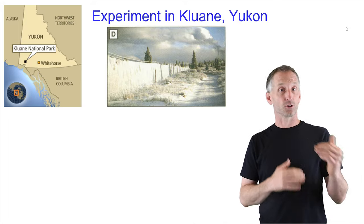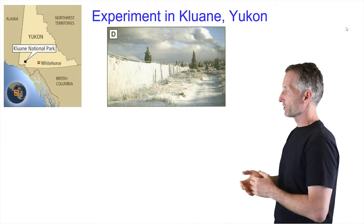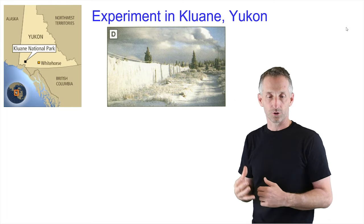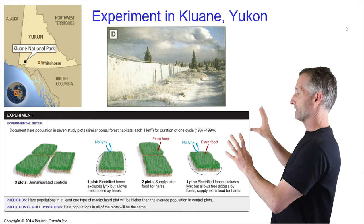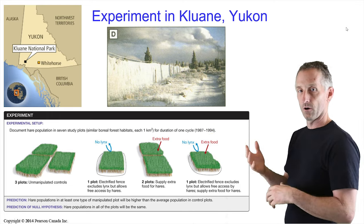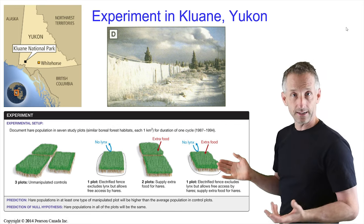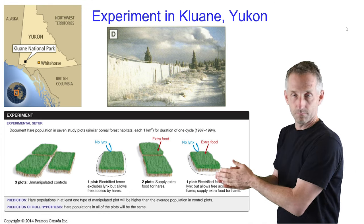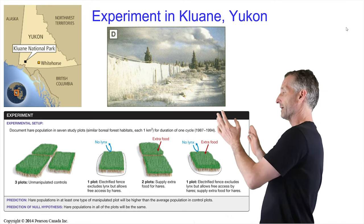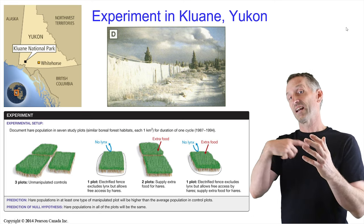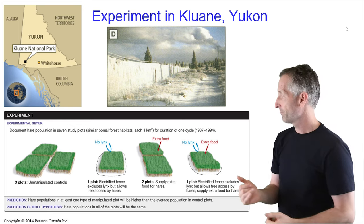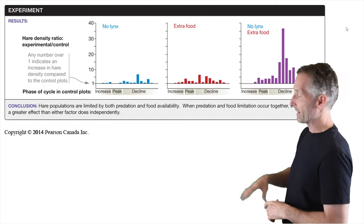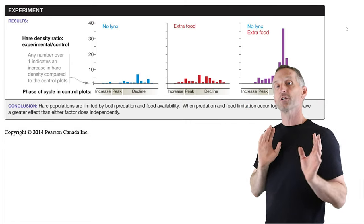There was an experiment to determine the drivers of these cycles, where they built large exclosures in the Yukon Territory in Kluane National Park. They did different things in these different enclosures: some were unmanipulated controls where things could go in and out freely. In one plot they put an electrified fence so lynx couldn't get in. In two other plots they added extra food for the hares but allowed lynx in and out. In the final one, they excluded lynx with an electric fence and also added food.